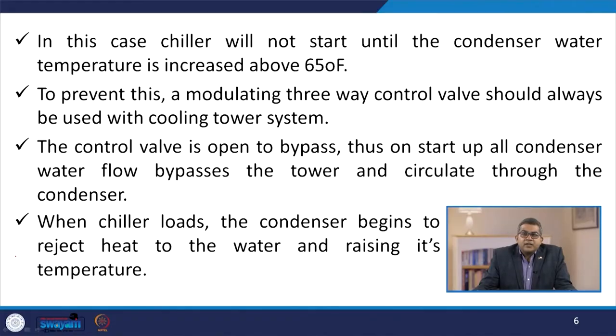The chiller will not start until the condenser water temperature is increased above 65 degrees Fahrenheit. To prevent this, a modulating three-way control valve should always be used with a cooling tower system. The control valve is open to bypass, so on startup all condenser water flow bypasses the tower and circulates through the condenser. When the chiller loads, the condenser begins to reject heat to the water, raising its temperature.